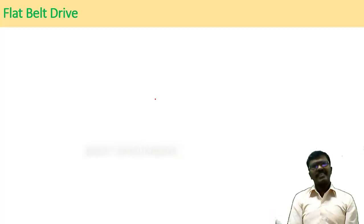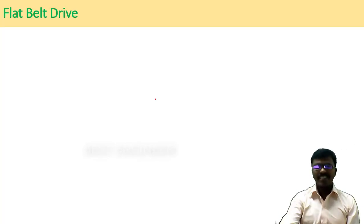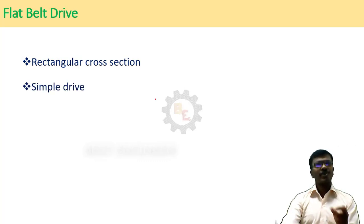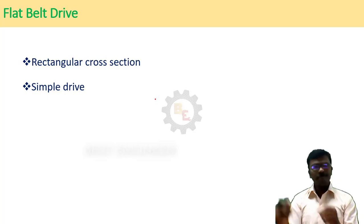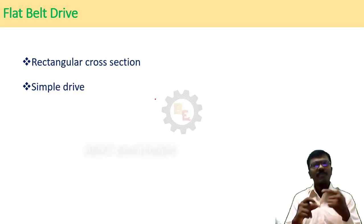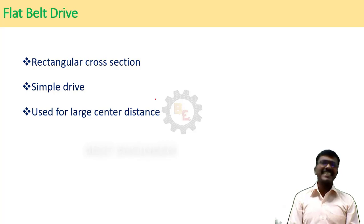What is a flat belt? A belt which has a rectangular cross section is called a flat belt. This flat belt drive is very simple in construction because there is only a pulley and belt — there is no need for any external groove to accommodate the belt. The pulley surface is simply a circular one. This flat belt drive can be used for large center distance power transmission.